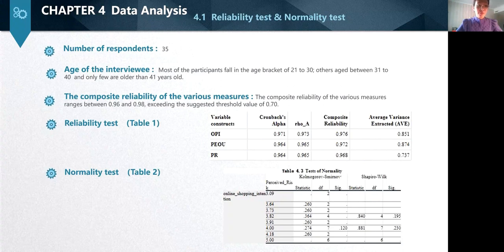Results from test of normality shown that both constructs had average variance extracted value more than 0.5, suggesting they fulfilled the appropriate convergent validity norm.